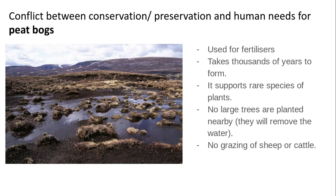Peat bogs are extracted and used for fertilizers on plants and in gardens. However, they take thousands of years to form. They are fairly acidic and can be used to preserve things — in the past, bodies have been found in them, which have been used for historical studies, giving an idea of how long they take to form. They also support some rare species of plants.